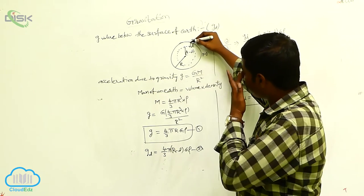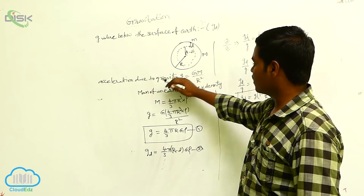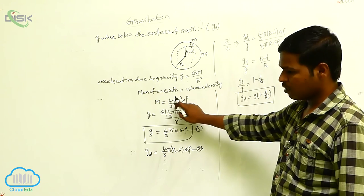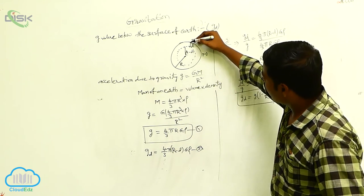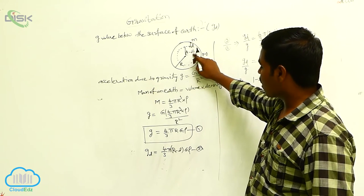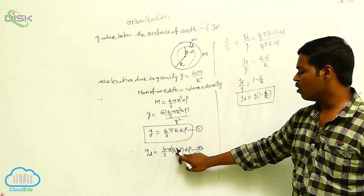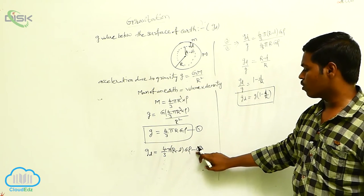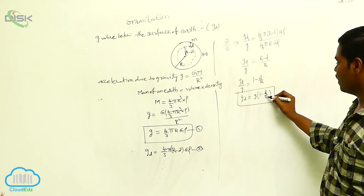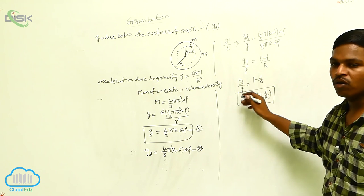To summarize: on the surface of the earth, g = GM/r^2. Considering the density ρ of the earth, the mass is (4/3)πr³ρ. When an object of mass m is below the surface at depth d, the distance from the center is r minus d, and the acceleration due to gravity is g_d = (4/3)π(r - d)Gρ. Dividing gives g_d = g(1 - d/r). As the depth increases below the surface of the earth, the acceleration due to gravity decreases.